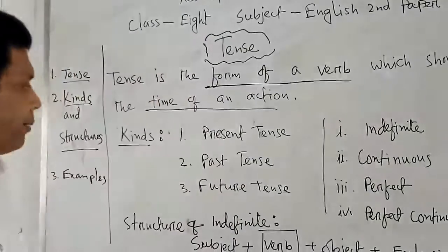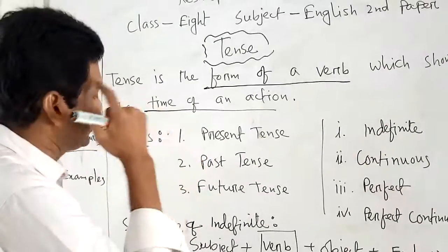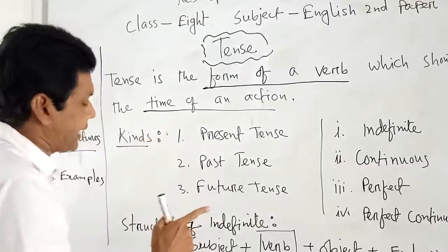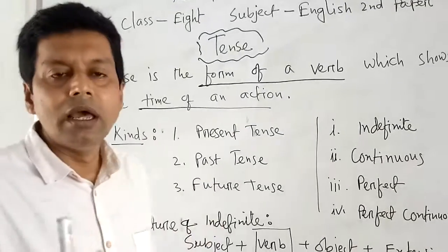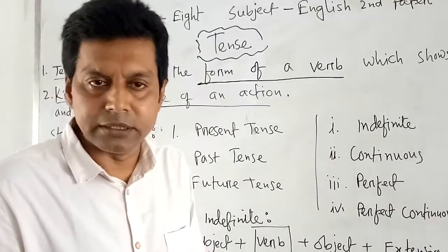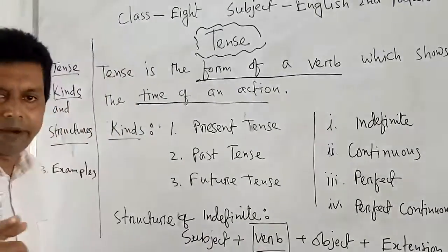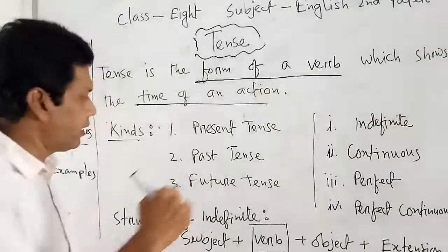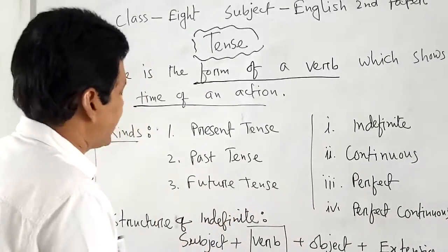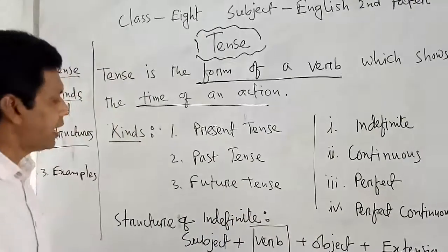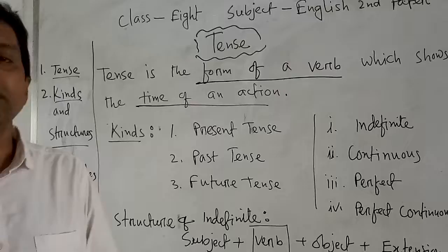There are three kinds of tense: number one, present tense; number two, past tense; and number three, future tense.